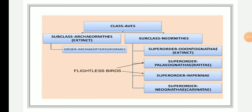Subclass one, Archaeornithes — 'Archaeo' means ancient and 'ornithes' means bird — includes ancient birds. All the members of this subclass are extinct, and these birds lived during the Mesozoic era.